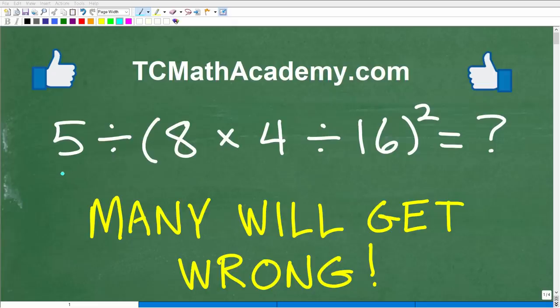Okay, let's put our calculators away and figure out what the answer is to this problem here. So we have 5 divided by parentheses, 8 times 4 divided by 16, and parentheses squared. What is this equal to?